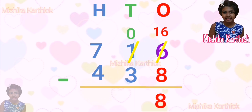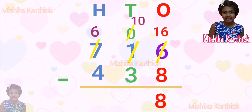Then, in tens: 0 minus 3 — we cannot subtract 0 tens from 3 tens. So, we will borrow 1 hundred. 7 becomes 6, and 0 becomes 10. Now we can subtract: 10 minus 3 equals 7. Then, in hundreds: 6 minus 4 equals 2.